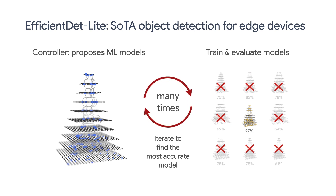At the time this video was created, the state-of-the-art for edge device optimized object detection model architectures is called EfficientDet Lite. A research team at Google used a technique called neural architecture search, also known as AutoML, to discover this model architecture. The idea was to use machine learning to discover new model architectures which are under a model size and inference speed limit while maximizing the accuracy.